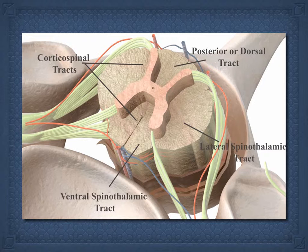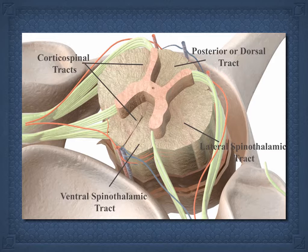We take advantage of the fact that proprioception and vibration are carried in the same tract by using low-frequency tuning forks at 128 Hz or lower to test how the posterior tract is functioning. This tract is often disturbed in B12 deficiency, for example. Muscles are controlled by the corticospinal tract. The lateral spinothalamic tract deals with sharp pain and thermal sensation, while the ventral spinothalamic tract deals with light touch. These distinctions give us indications of spinal stenosis, disc problems, or cord pathology such as tumor or fracture.